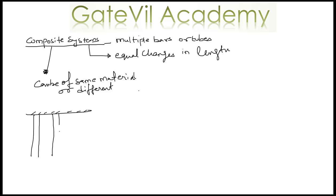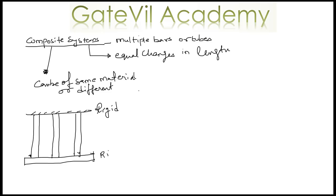Let's take a composite system with three bars — one, two, and three — and they are rigidly connected together. These bars are of different materials and different cross-sectional areas. Let's take A1 as the cross-sectional area of bar one and E1 as the Young's modulus of bar one, and similarly A2, E2 be the cross-sectional area and Young's modulus of bar two.